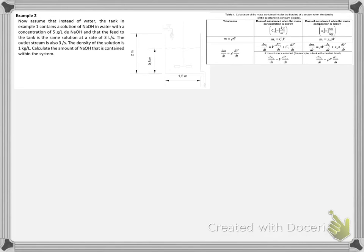Example 2. Now assume that instead of water, the tank in Example 1 contains a solution of NaOH in water with a concentration of 5 grams per liter of NaOH, and that the feed to the tank is the same solution at the rate of 3 liters per second. The outlet stream is also 3 liters per second. The density of the solution is 1 kilogram per liter. Calculate the amount of NaOH that is contained within the system.